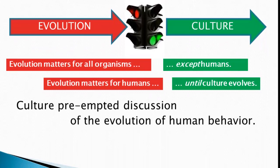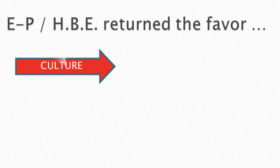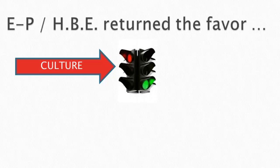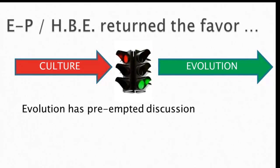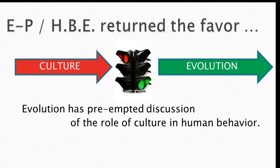Through most of the 20th century, culture preempted discussion of the evolution of human behavior. Evolutionary psychologists and human behavioral ecologists returned the favor — culture hits a red light and evolution gets the green light. What has happened in the last half century is that evolution has preempted discussion of the role of culture in human behavior. We have alternate exclusions: the social sciences excluding evolution, and the evolutionary sciences excluding culture.